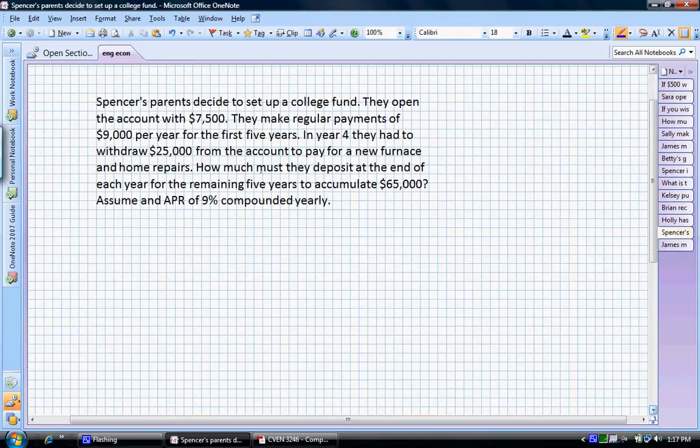Rather than write our knowns and unknowns because we have so many and we have so many components to this problem, I'm going to draw out the cash flow diagram. And I think that will be probably the best way to follow through this problem.